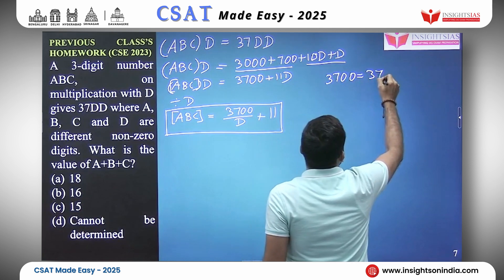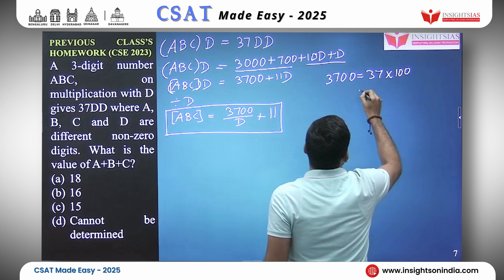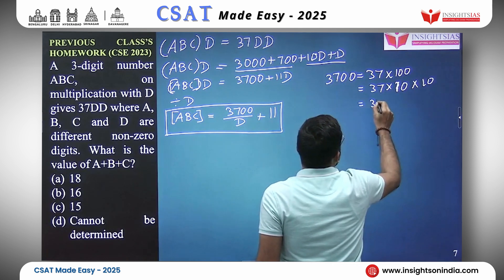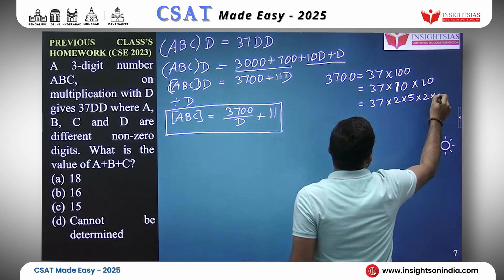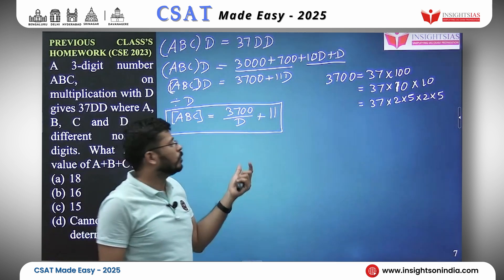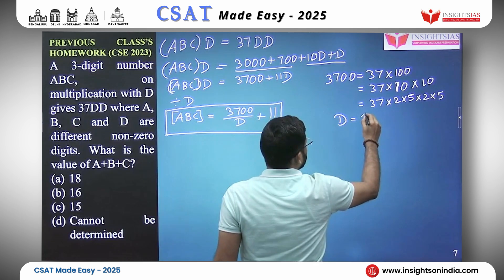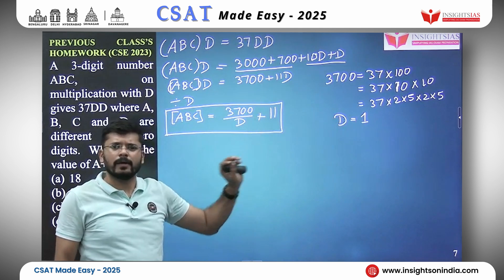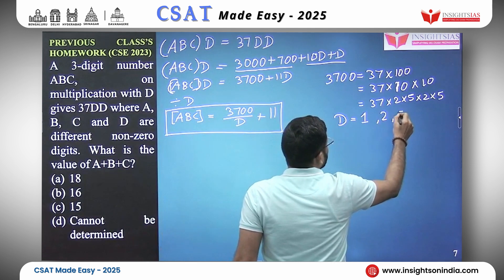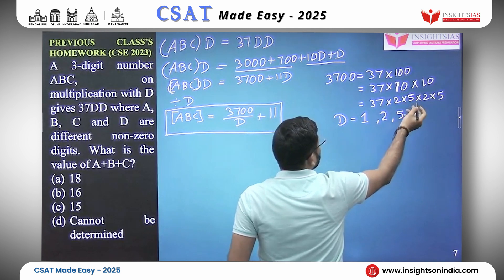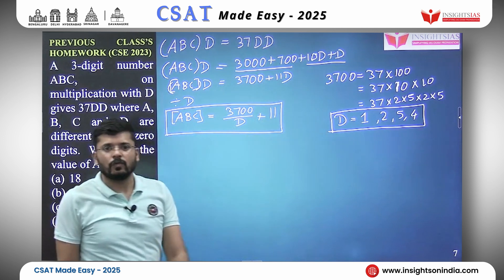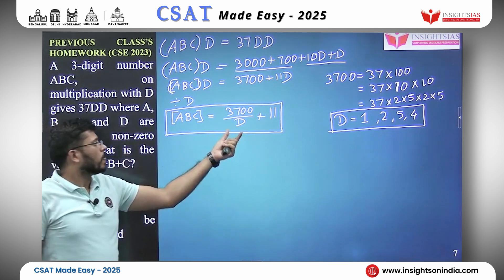We look at the factors of 3700: 3700 equals 37 times 100 equals 37 times 2 times 5 times 2 times 5. So the single-digit factors D can take are: 1, 2, 4, or 5. It cannot be 10 or 25 since those are two-digit numbers. So D has four possible values.